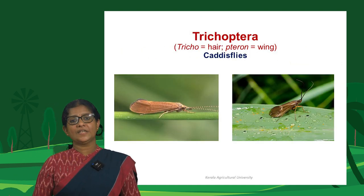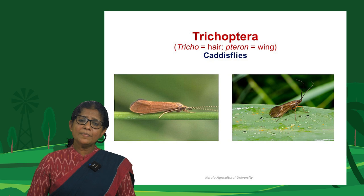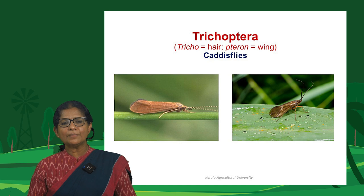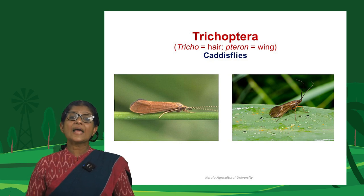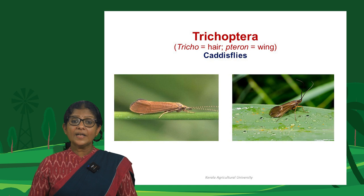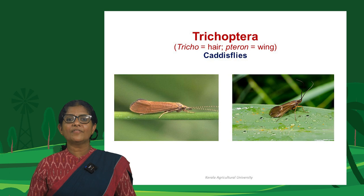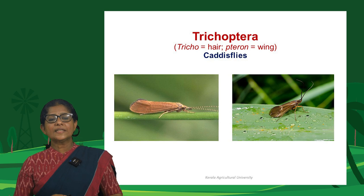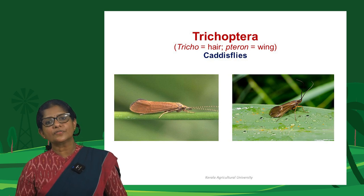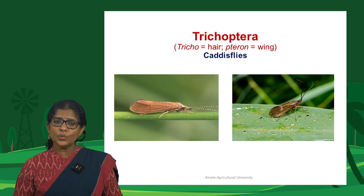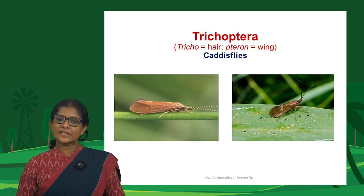Trichoptera are caddisflies, which resemble moths and have aquatic larvae, many of which are case bearers. They are called Trichoptera because of the presence of hairs (trichomes) throughout their wings, with scales present in a few. Lepidoptera are butterflies, moths, and skippers — the most beautiful group of insects, brightly colored, and celebrated by artists and textile designers. The name Lepidoptera comes from 'lepidos' (scales) and 'ptera' (wing), as their wings, appendages, and body are covered with pigmented scales.